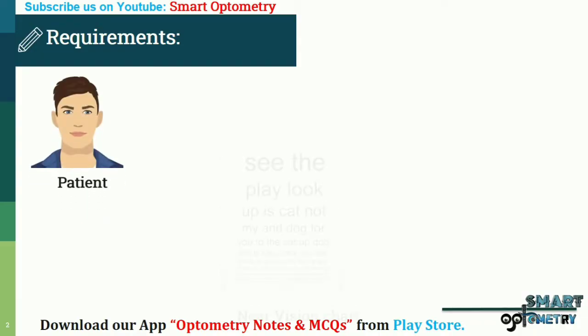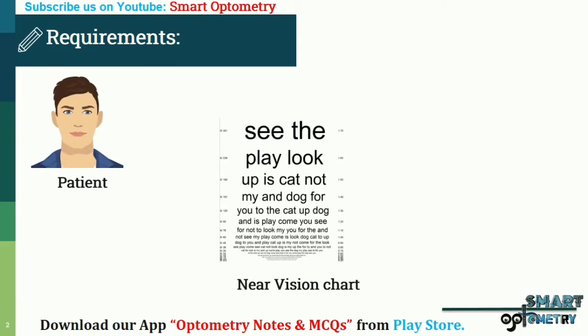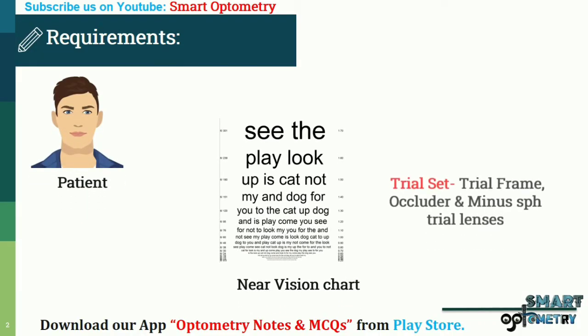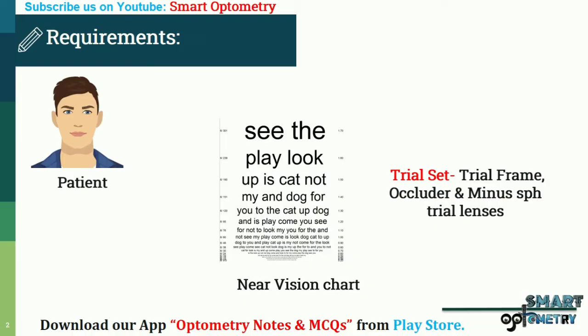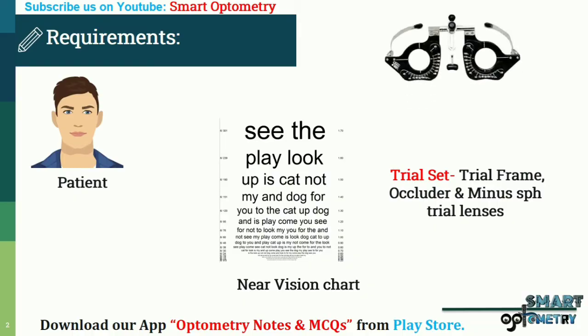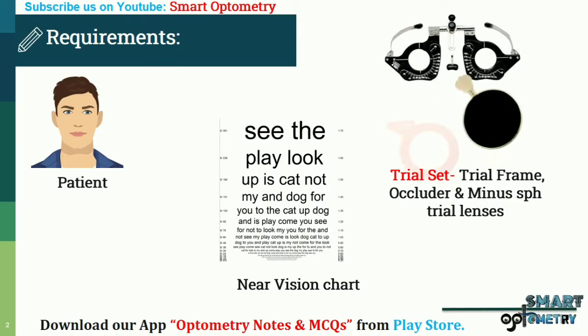We need a patient, a near vision chart, and a trial set. From the trial set, we will need a trial frame, an occluder, and minus spherical trial lenses.